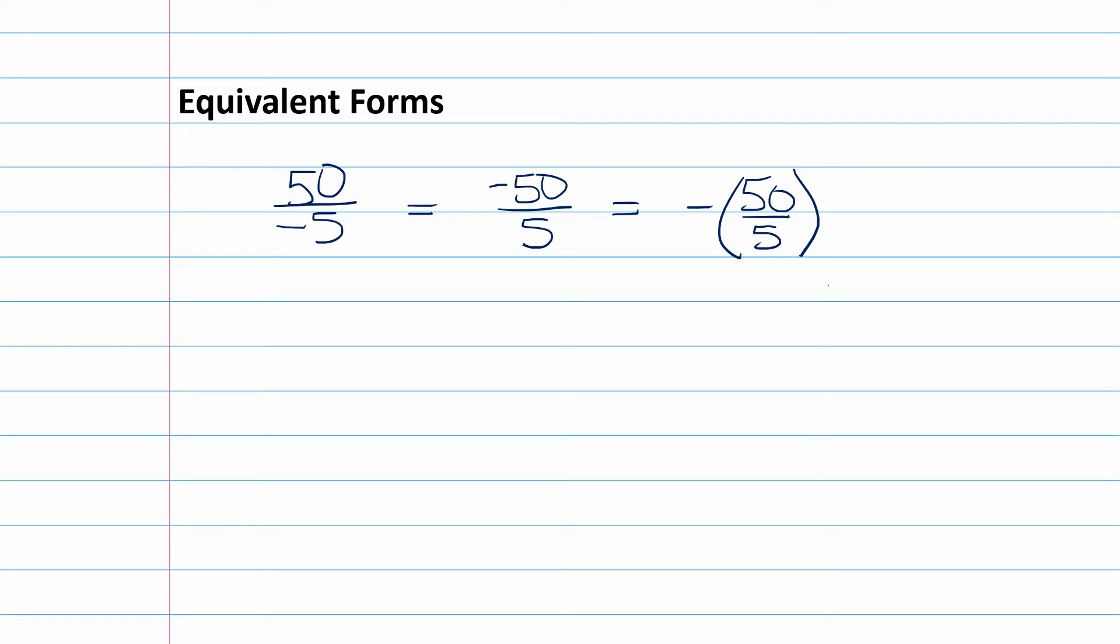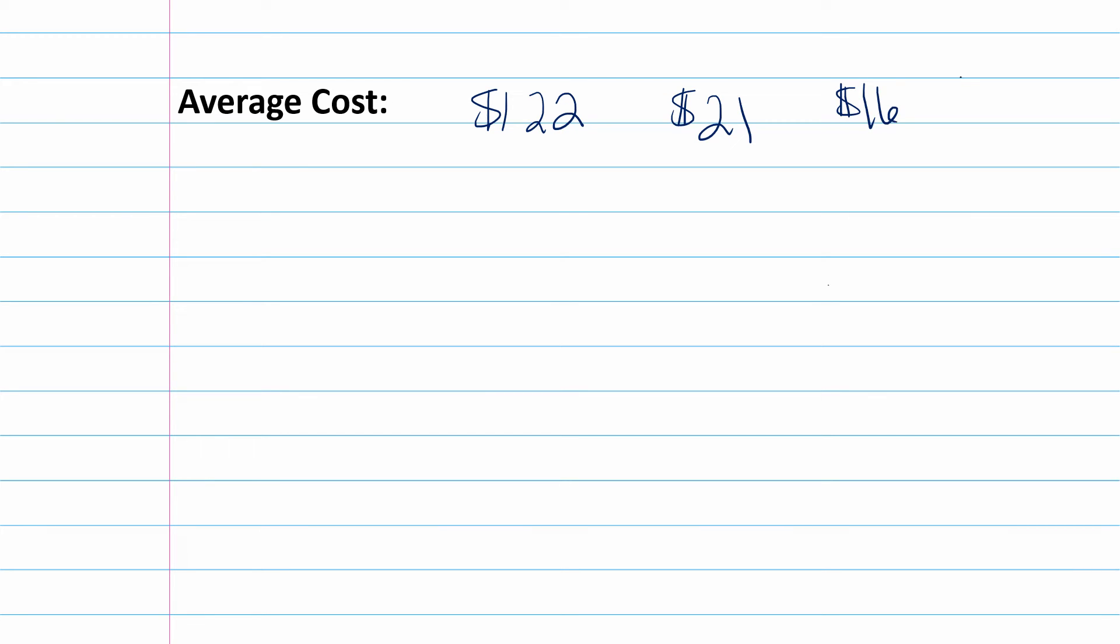We really only have one more thing to review: average. What is the average cost if we spent $22 one day, $21 the next day, $16 the third day, and $11 the fourth day? What would be our average cost? Remember, we need to add up all the numbers and divide by the total number of numbers. So we're going to do 22+21+16+11, and there are four numbers, so we divide by 4.